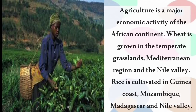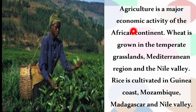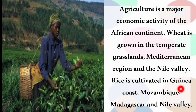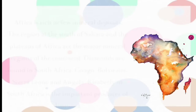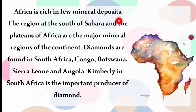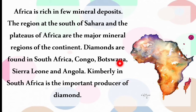Agriculture is a major economic activity of the African continent. Wheat is grown in the temperate grasslands, Mediterranean region and the Nile Valley. Rice is cultivated in the Guinea coast, Mozambique, Madagascar and the Nile Valley. Cotton is the chief cash crop of Africa. Diamonds are found in South Africa, Congo, Botswana, Sierra Leone and Angola, with Kimberley in South Africa being an important diamond producer.